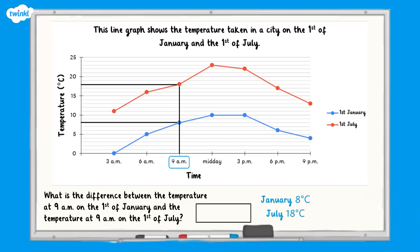Now check your answers. To find the difference we need to subtract 8 from 18, giving us the answer of 10 degrees.